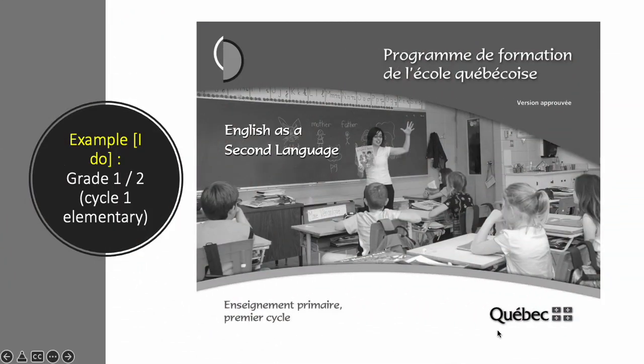So let's have a look. This is the Programme de Formation de l'École de Québec, or Éducation de Québec for English, Second Language. This is for grade one and two. So I'm starting right back at the beginning. But there is one of these for every single level that you're going to teach. So grade one all the way through secondary five in high school. There's a program for each one. This is just my example for today.